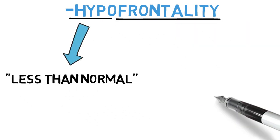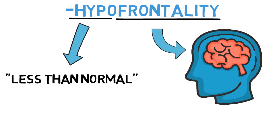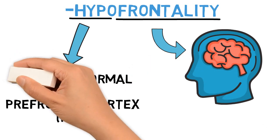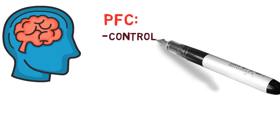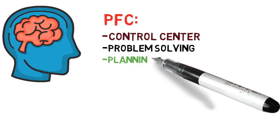Okay, but let's move on to the next one which is hypofrontality. Now hypo means less than normal and frontality refers to the part of your brain that is right behind your forehead named prefrontal cortex or PFC. So it basically means less than normal functioning PFC. And your PFC is the very control center of your brain. Its job is problem solving, planning,